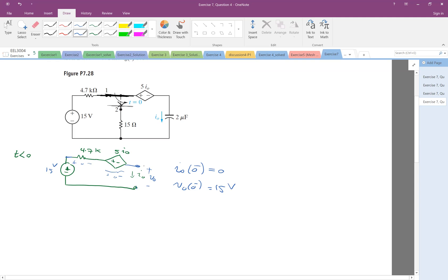So I can do a KVL. Plus V0, minus 15, plus 0, plus 0, equal to 0. So V0 is 15 volts. So this is the initial condition, or right before the switch changes its position.